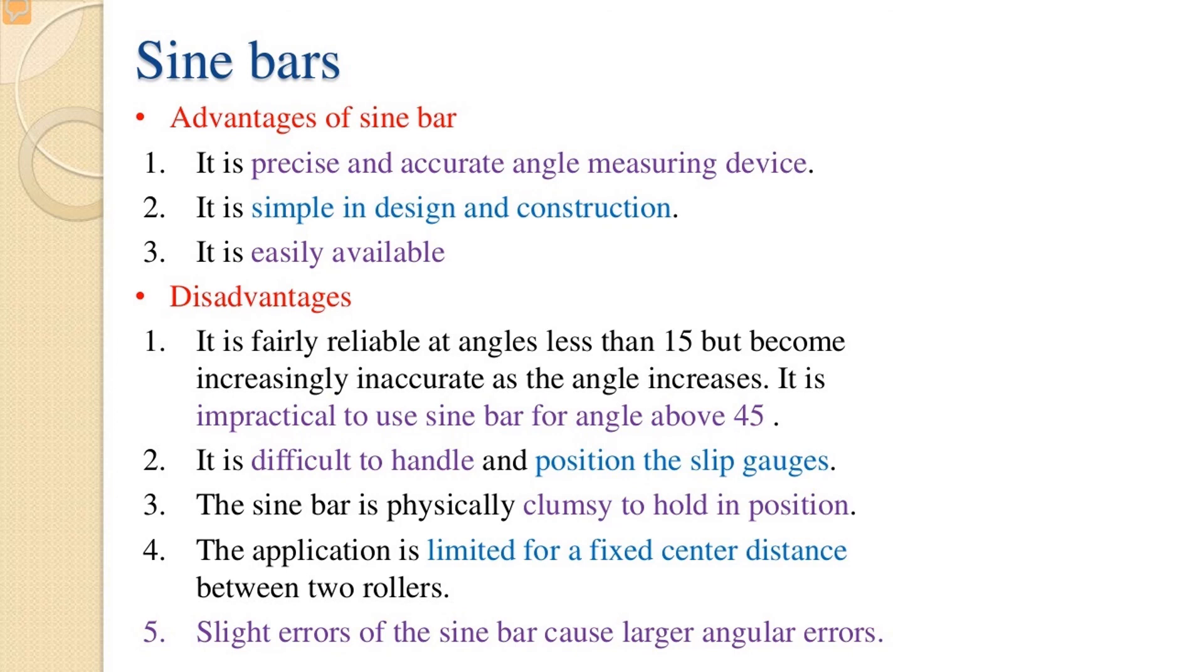Now disadvantages. It is fairly reliable at angles less than 15 degrees but becomes increasingly inaccurate as the angle increases. It is impractical to use sine bar for angles above 45 degrees. It is difficult to handle and position the slip gauges. Third, the sine bar is physically clumsy to hold in position. Fourth, the application is limited for fixed center distance between two rollers. And last, slight errors of sine bar cause larger angular errors.